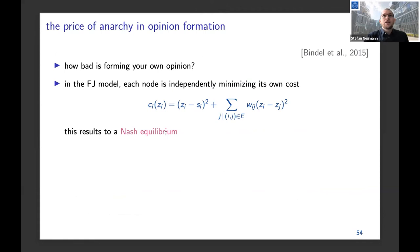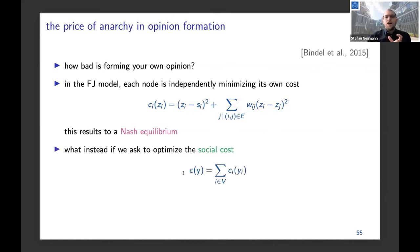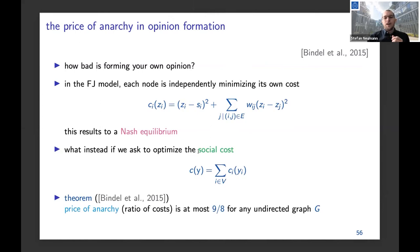Based on this observation, a very important paper by Bindel, Kleinberg and others asks: how bad is forming your own opinion? People set their opinion to minimize this cost function, which from a game theoretic point of view converges to a Nash equilibrium. We can define the social cost as the sum over cost functions for all users. The question is: how far is the selfish behavior in the Nash equilibrium from the optimal social cost? For undirected graphs, this ratio is just 9/8 — so we're not that far away. This is also called the price of anarchy. For directed graphs, however, the price of anarchy can be much higher.